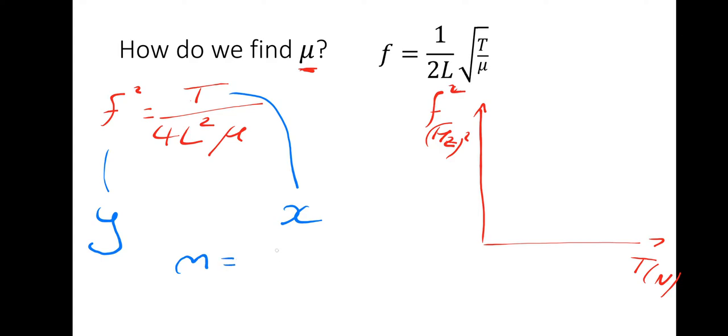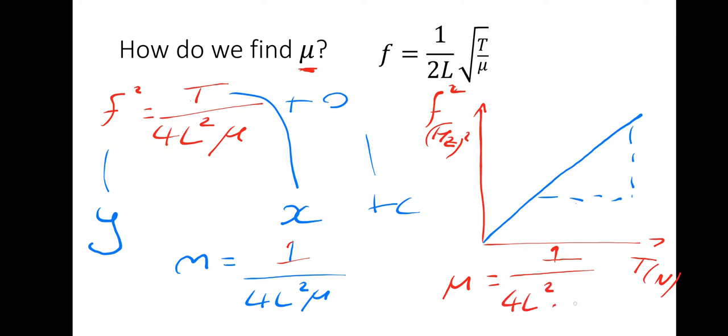So the gradient is 1 divided by 4L squared mu. So this graph of frequency squared against tension, when you take some results, you should get a straight line that goes through the origin. Goes through the origin because plus 0. So plus c will be through the origin. And the gradient of that graph would be the 1 over 4L squared mu. So to get the mass per unit length, it's simply 1 divided by 4 times L squared times the gradient.